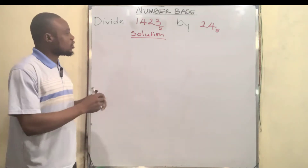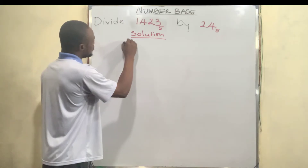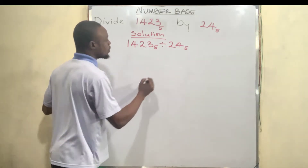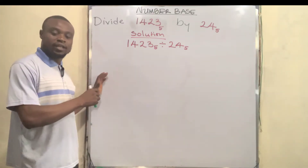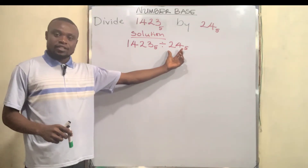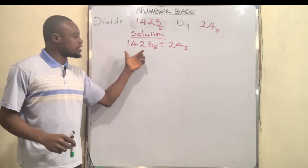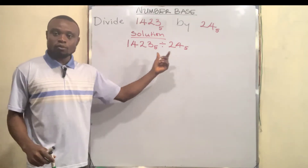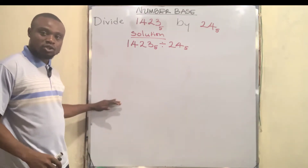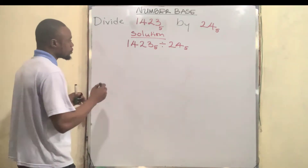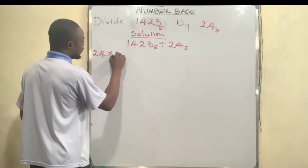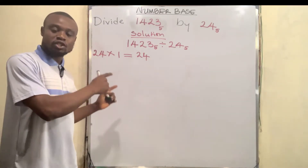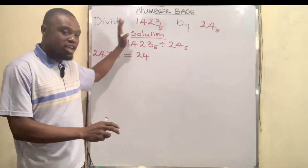So the first thing we are going to do in the long division method — the question is 1423 base 5 divided by 24 base 5. We need to multiply the divisor by the individual digits of the dividend. This is the dividend and this is the divisor. So we multiply 24 by 1, multiply 24 by 2, multiply 24 by 3, and multiply 24 by 4. Note that all multiplication is also done in base 5.